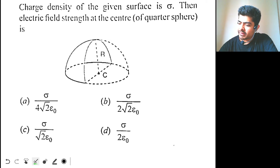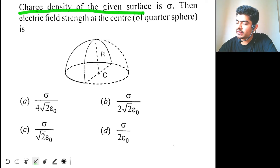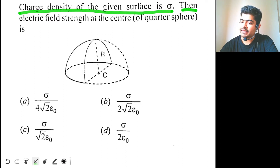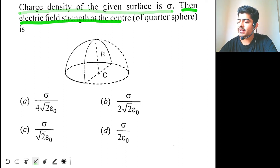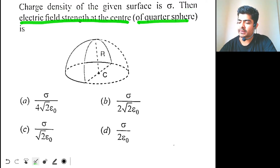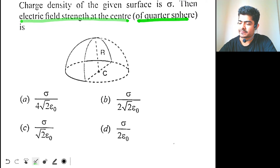Interesting question. Charge density of the given surface is sigma. Then electric field strength at the center of the quarter sphere is what we need to find.